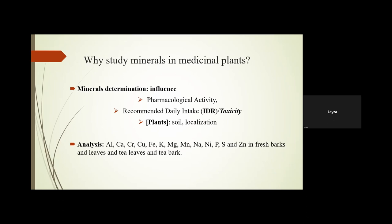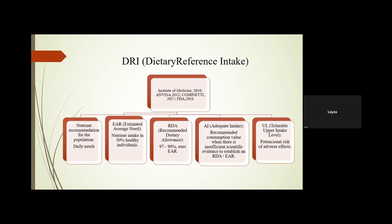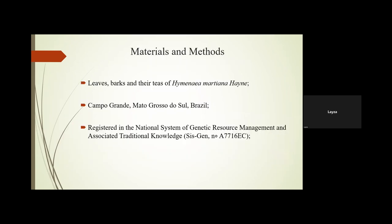In my study, we analyzed these minerals in fresh barks and leaves, and in leaf and bark teas. We used the Dietary Reference Intake from the Institute of Medicine, FDA, and ANVISA, and for comparison we used the estimated average requirement, recommended dietary allowance, adequate intake, and tolerable upper intake level, which represents the potential risk of causing adverse effects. Our material was leaves, barks, and their teas of Hymenaea martiana Hayne from Campo Grande, Mato Grosso do Sul, Brazil, registered in the national system of genetic resource management.